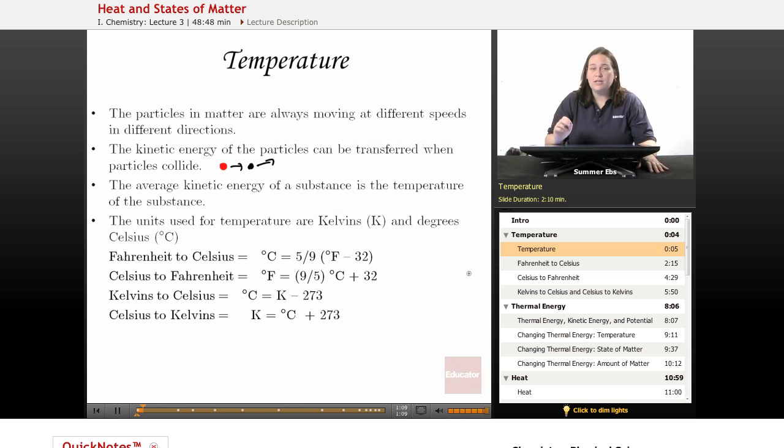The average kinetic energy of the substance, so the average of how fast these particles are moving, is called the temperature of the substance. So when you put a thermometer into a substance, what you're actually measuring is the speed that the particles are moving, the average speed. Not all particles are moving at the same speed, even though the substance is the same temperature.